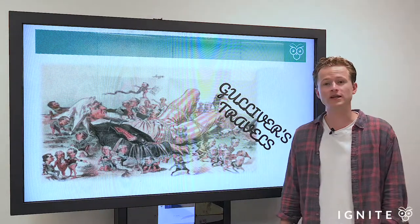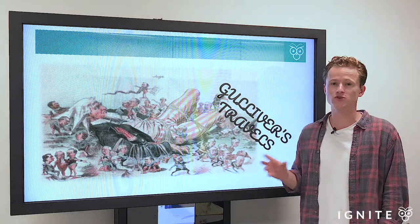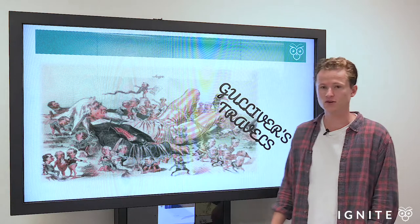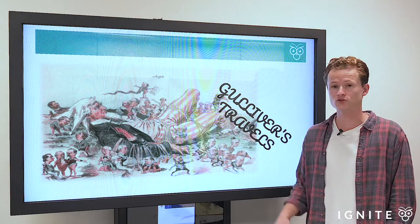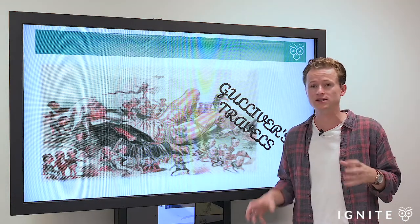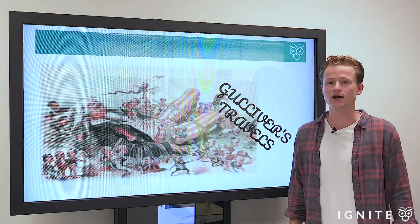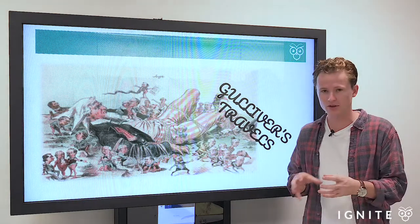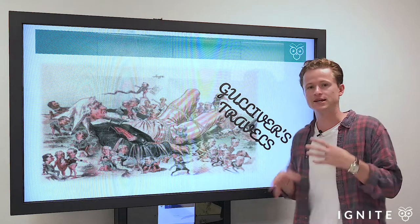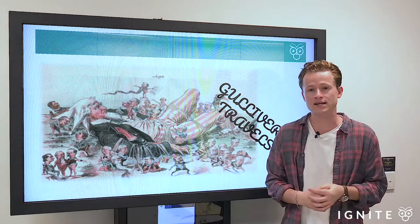Hey guys, I'm Tom from Ignite. Today we're going to be discussing Jonathan Swift's 1726 novel, Gulliver's Travels. Particularly we're going to be talking about the key themes that are critical for your analysis, and the way that they're reflected in various scenes and progressions of this text.